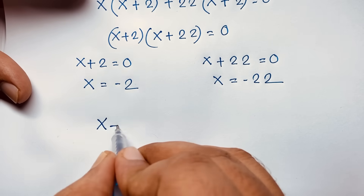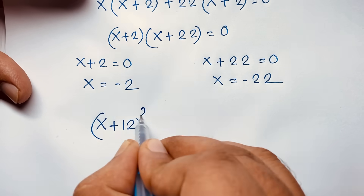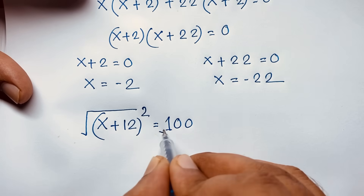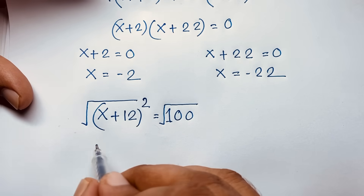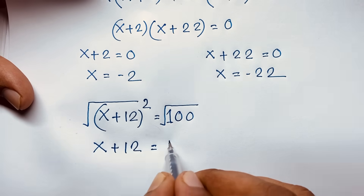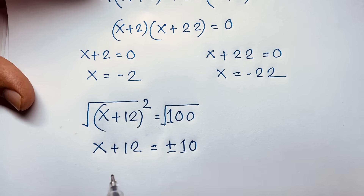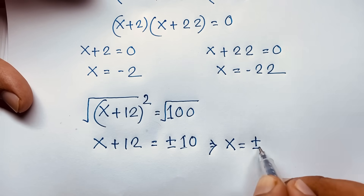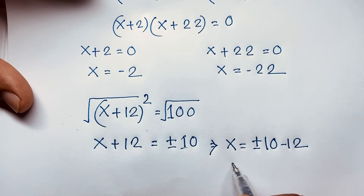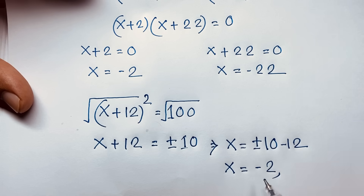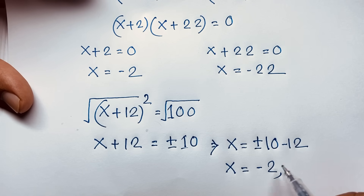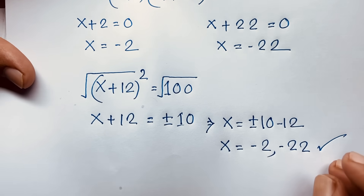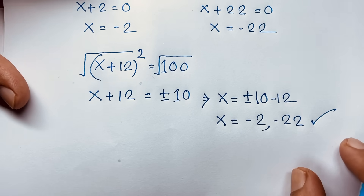So I solved this question by another method as well. Our question is (x + 12)² = 100. Now I use square roots on both sides. Then you can see x + 12 = ±10. Moving 12 to the other side gives x = ±10 − 12. So x = 10 − 12 = −2, or x = −10 − 12 = −22.